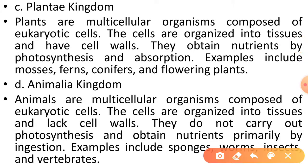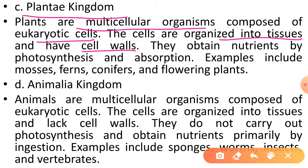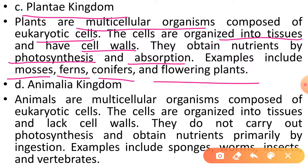Teesra kingdom Plantae kingdom hoga. Plants are multicellular organisms composed of eukaryotic cells. The cells are organized into tissues and have cell walls, jo ki cellulose se bani hongi. They obtain nutrients by photosynthesis aur absorption ke dwara nutrition prapt karenge. Examples mein mosses, ferns, conifers aur flowering plants aayenge.